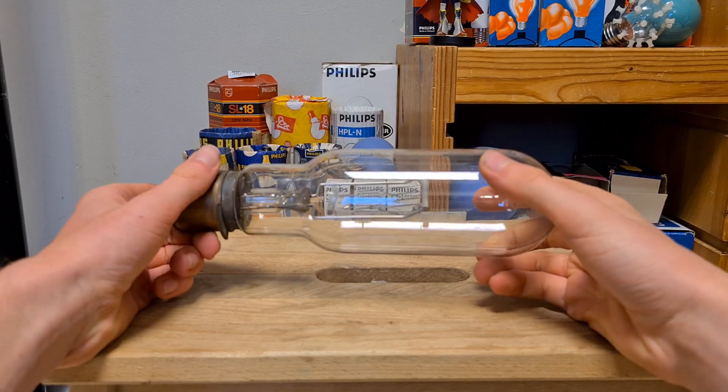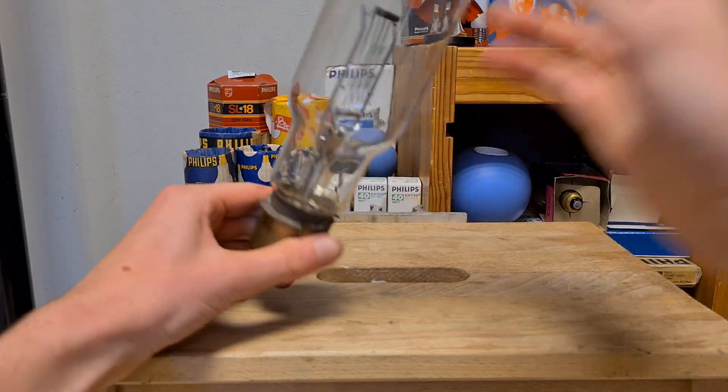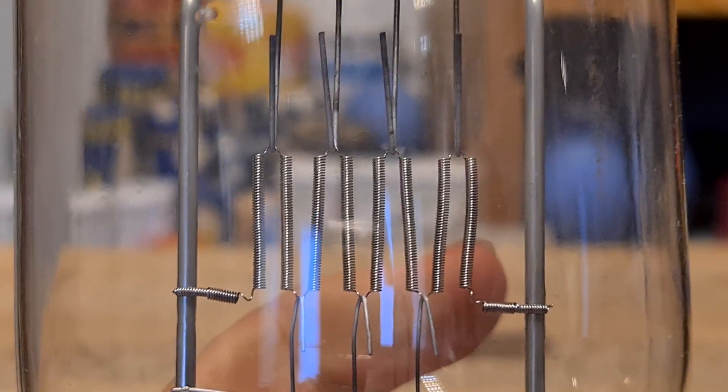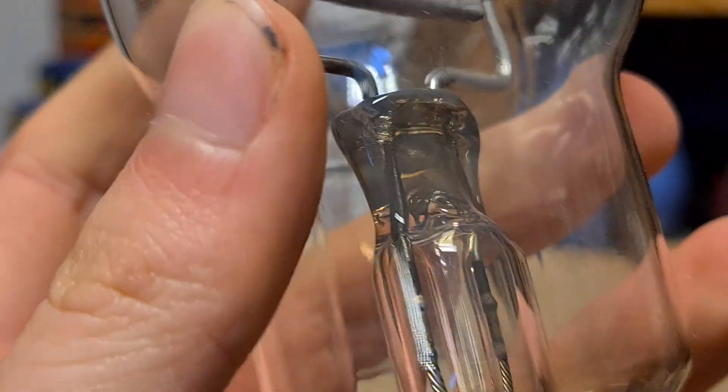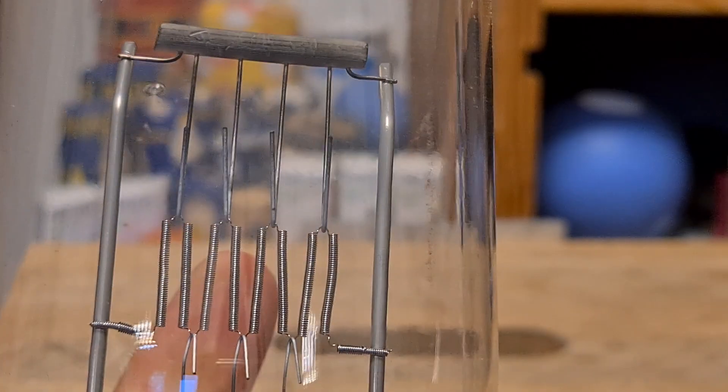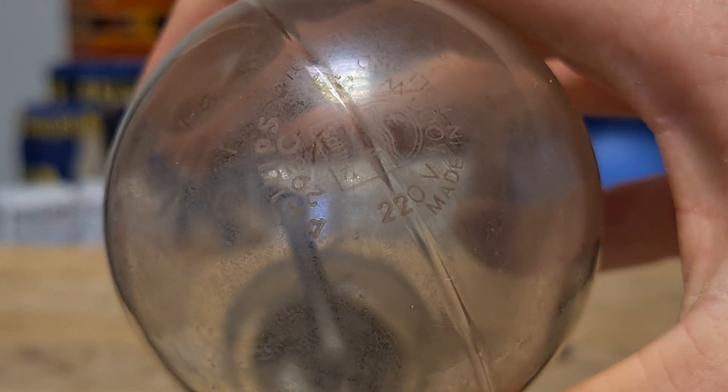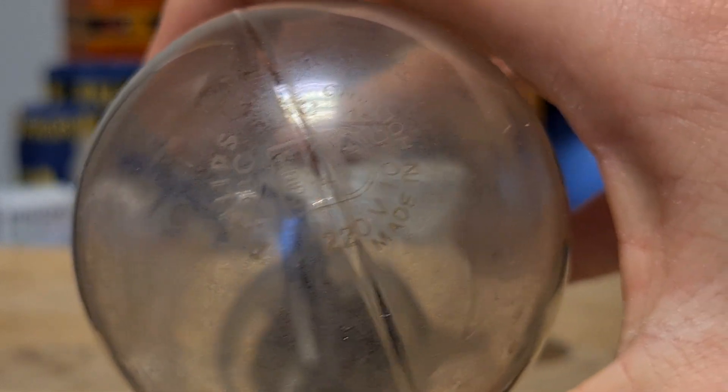Then we have 1000 watt incandescent and this one is still in the socket because it's so old, or it isn't in the socket, this is the socket. Yeah as you can see these are the spirals. And the edge of the bulb or the information is on the top. There it is, 1000 watt from Philips made in Holland.